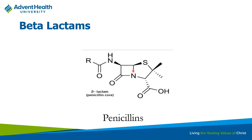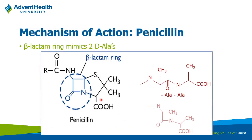We'll talk about allergies and cross-reactivity a little bit later. This is the business end of the molecule, so to speak. When you're forming that bacterial cell wall, there are a lot of cross-linkages that occur between the different layers. That cross-linkage occurs between two D-alanines, and if you look at two D-alanines, you'll find that they share a very similar structure to the beta-lactam ring.